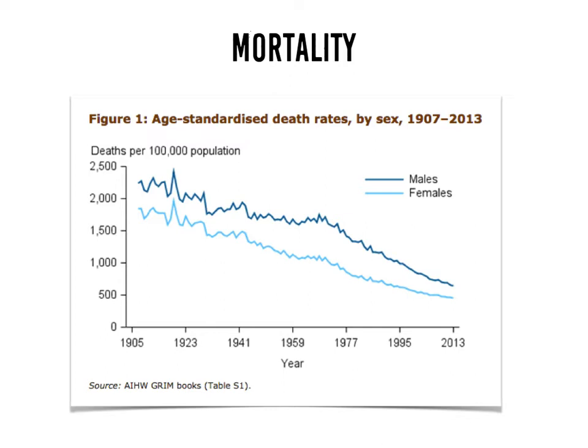In this graph you can see the death rate dating back to 1907 right through to 2013, and the trend is moving downward — so fewer people are dying as a proportion of the population in 2013 than in 1907. You can also see that the number of males dying compared to females is quite different, and while female mortality has always been lower than males, this gap has narrowed over time, particularly from 1995 to 2013.